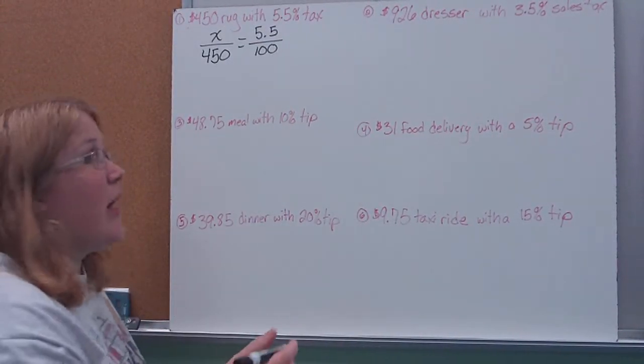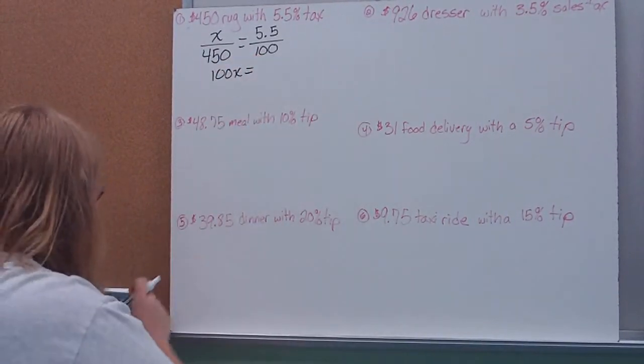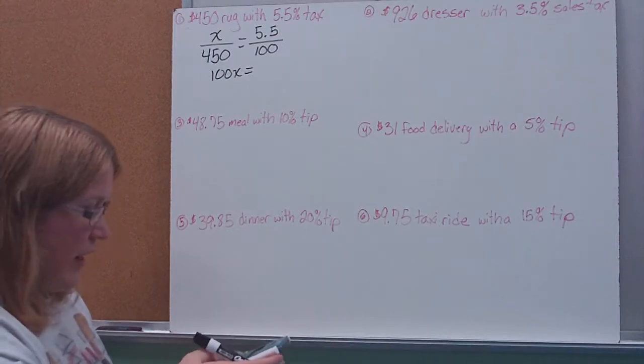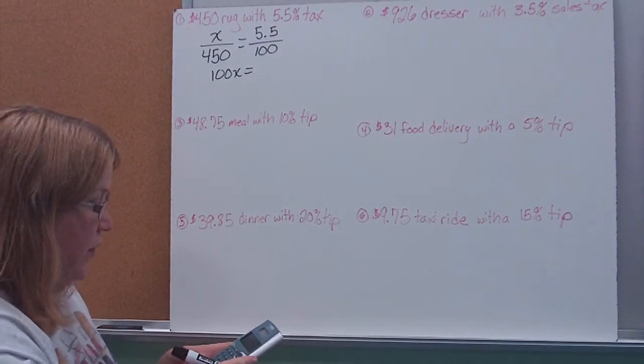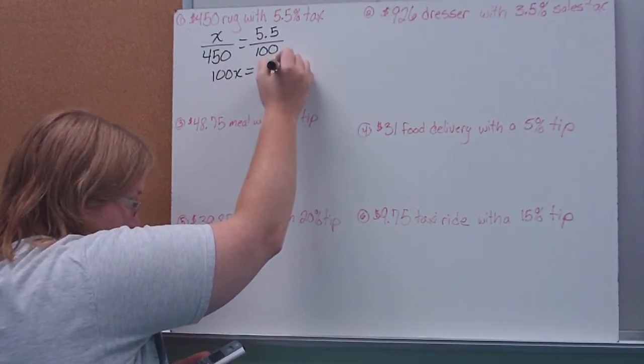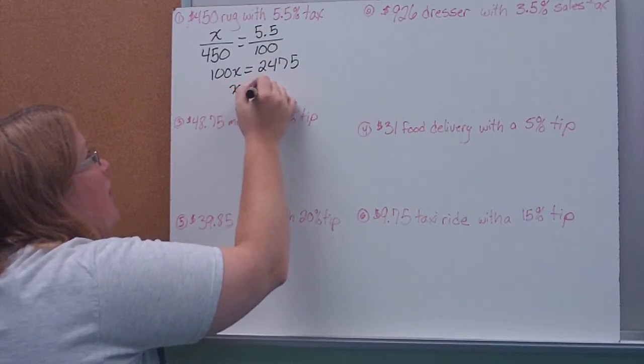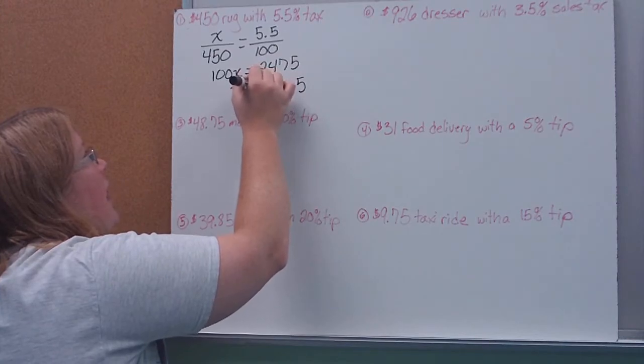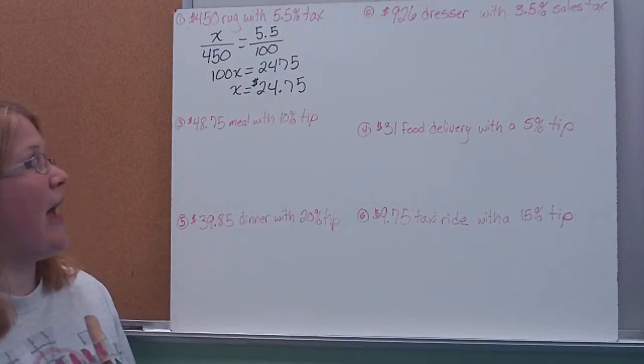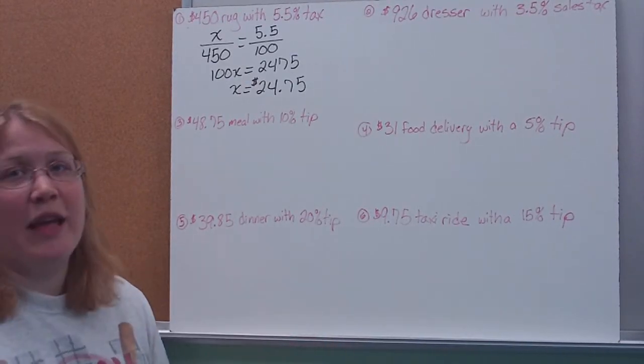So again, from here, we just solve our proportion. And I'm going to use my calculator to save time. 5.5 times 450 gives me $2,475. And then when I solve for X, I get $24.75 in tax. So you're paying almost another $25 in tax on something that expensive.